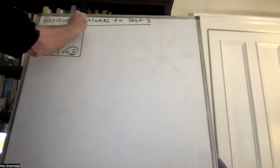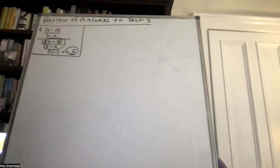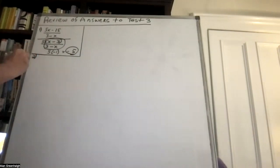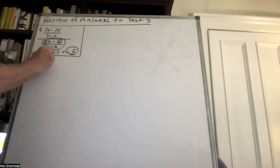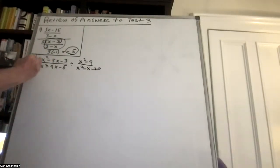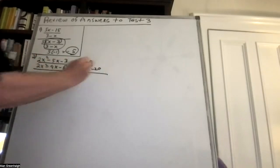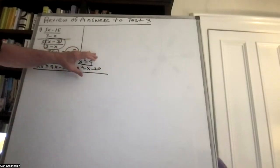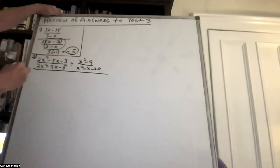Very few people got that wrong. Problem number 2 was a problem we've done in class similar to this. The idea behind this problem was to factor everything. It's a division problem, and the first step is to take the second fraction and invert it. Most people did that correctly.